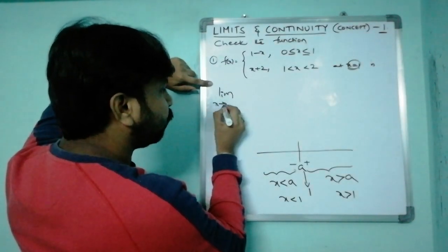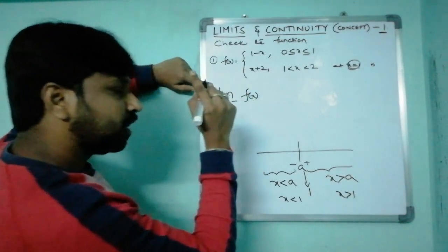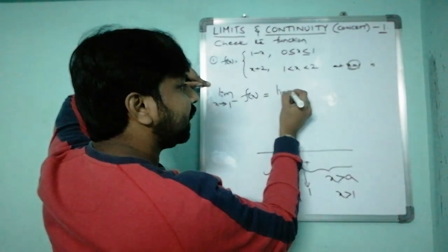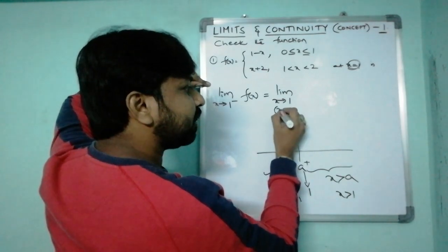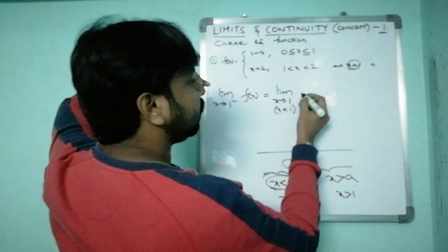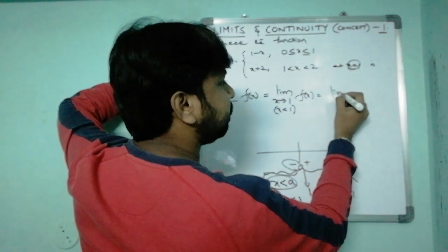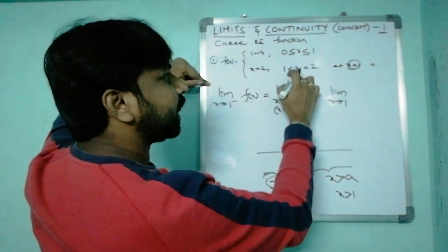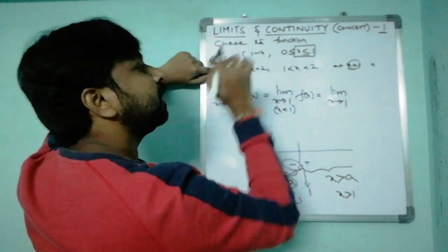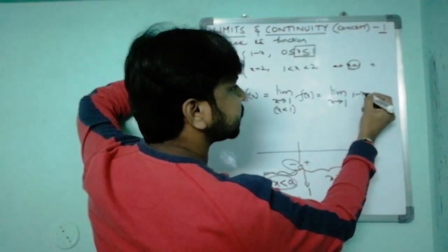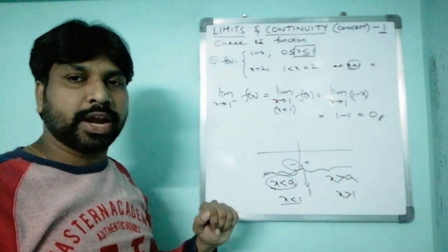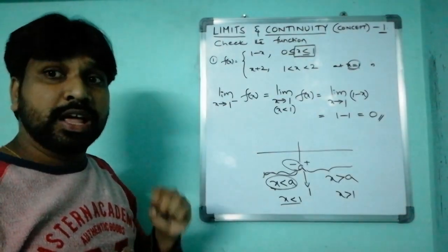So the left-hand limit = limit x→1 of (1 − x) = 1 − 1 = 0. For the right-hand limit, limit x→1 plus of f(x): x greater than 1 corresponds to the piece f(x) = x + 2. So if you find the right limit that also gives 0, and f(1) = 0 too, then f(x) would be continuous.